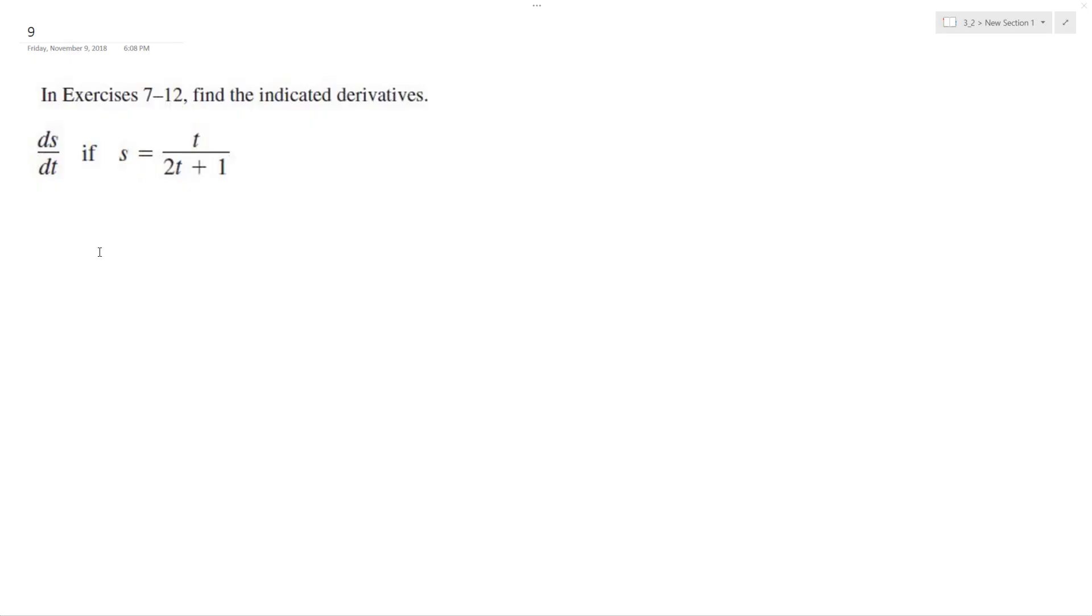All right, so we're going to solve this using the quotient rule. So s prime is going to be equal to t prime times 2t plus 1 minus t times 2t plus 1 prime. Okay, and this is all going to be over 2t plus 1 squared.